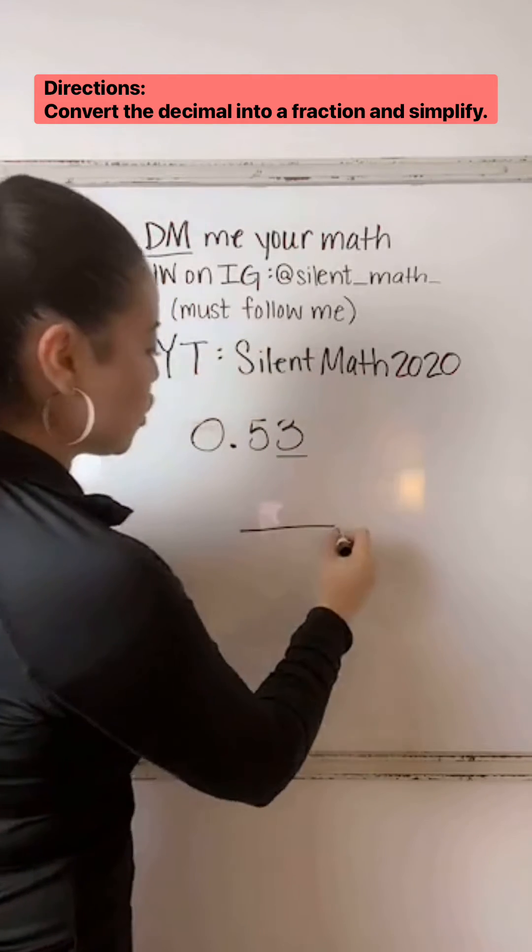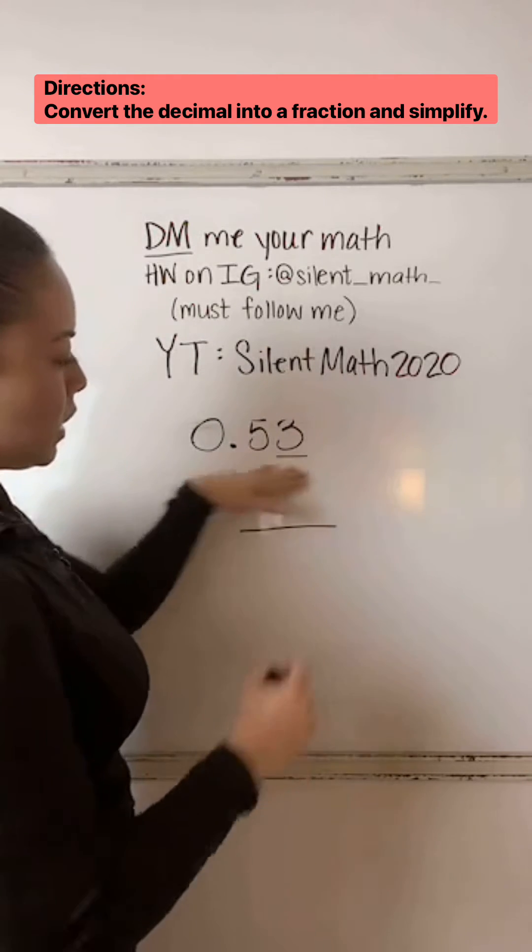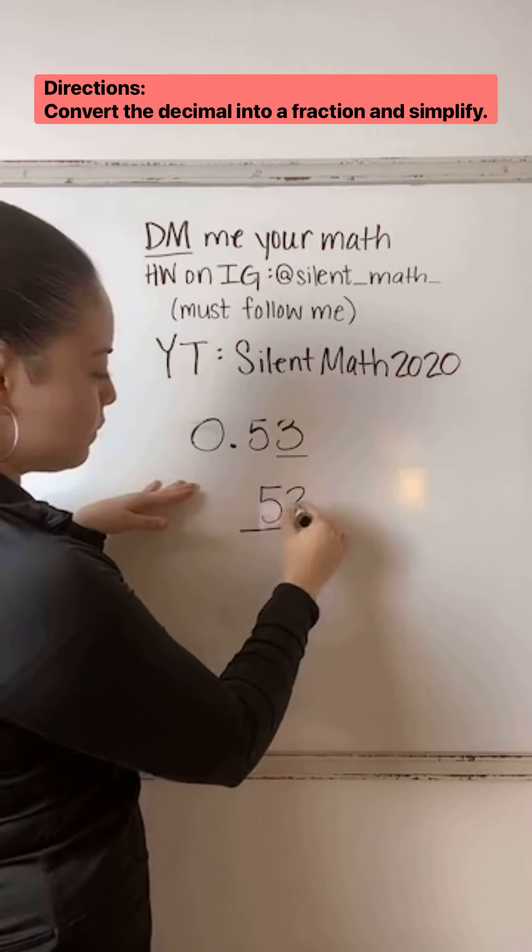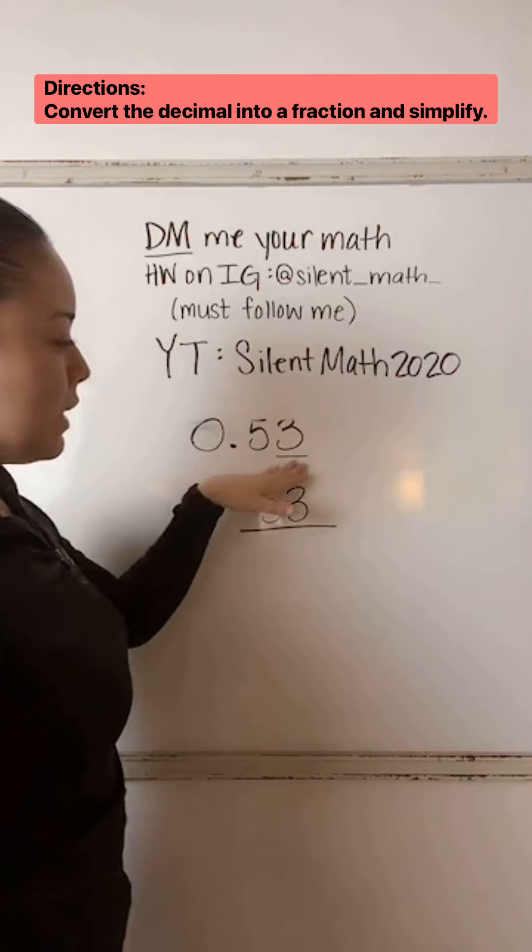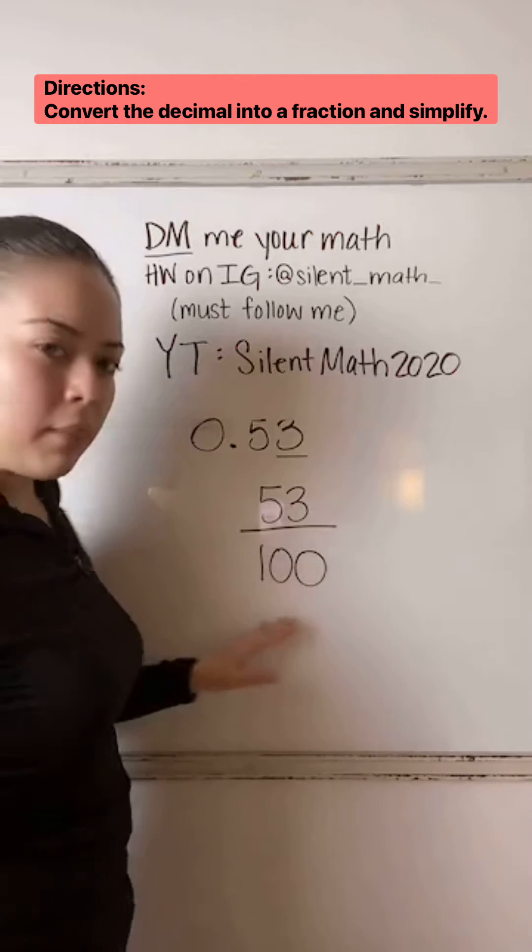That is going to determine the denominator of your fraction. So we're going to copy everything that was here. I'm going to copy the 53. Since the last digit is in the hundredths place, that's how you know what to put as your denominator.